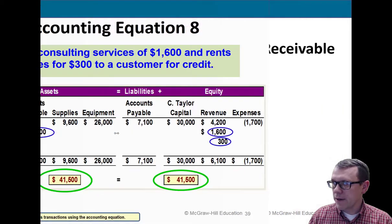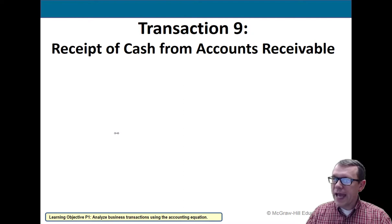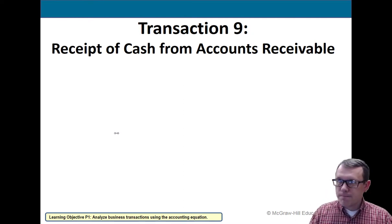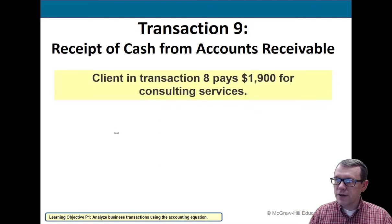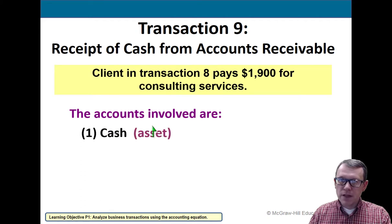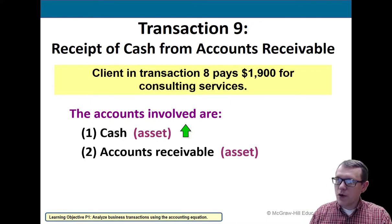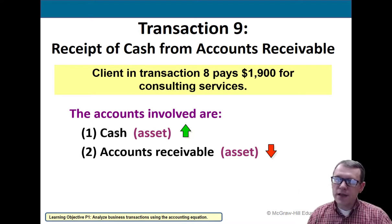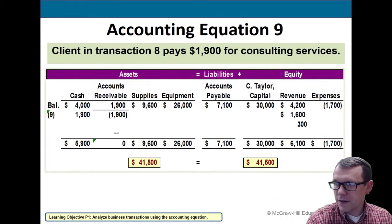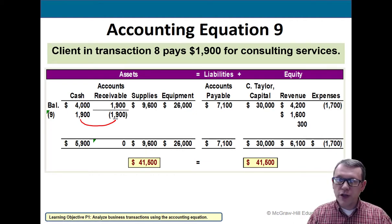Transaction nine: receipt of cash from accounts receivable. We're receiving cash, so cash (asset) goes up. Accounts receivable (also an asset) goes down — we're swapping assets. We collected what was owed to us. If you just looked at the total numbers you wouldn't see anything change, but looking at the line item detail you can see the asset swap: cash up, accounts receivable down.